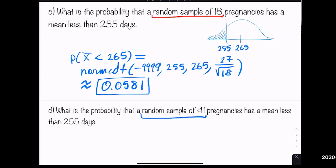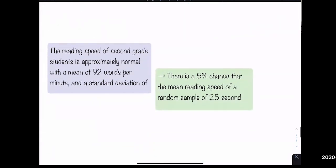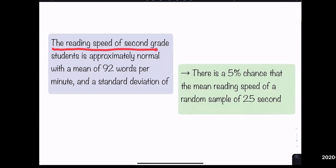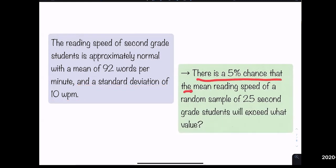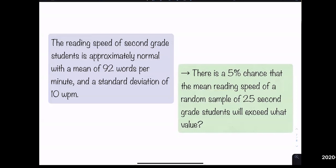Part d will have an even smaller probability since the sample size increases further. We'll save the last challenge question for next class: given that the mean reading speed is 92 with standard deviation 10, there's a 5% chance the mean reading speed of a random sample of 25 students will exceed what value? Any questions? No? Great — we finished all of 8.1.